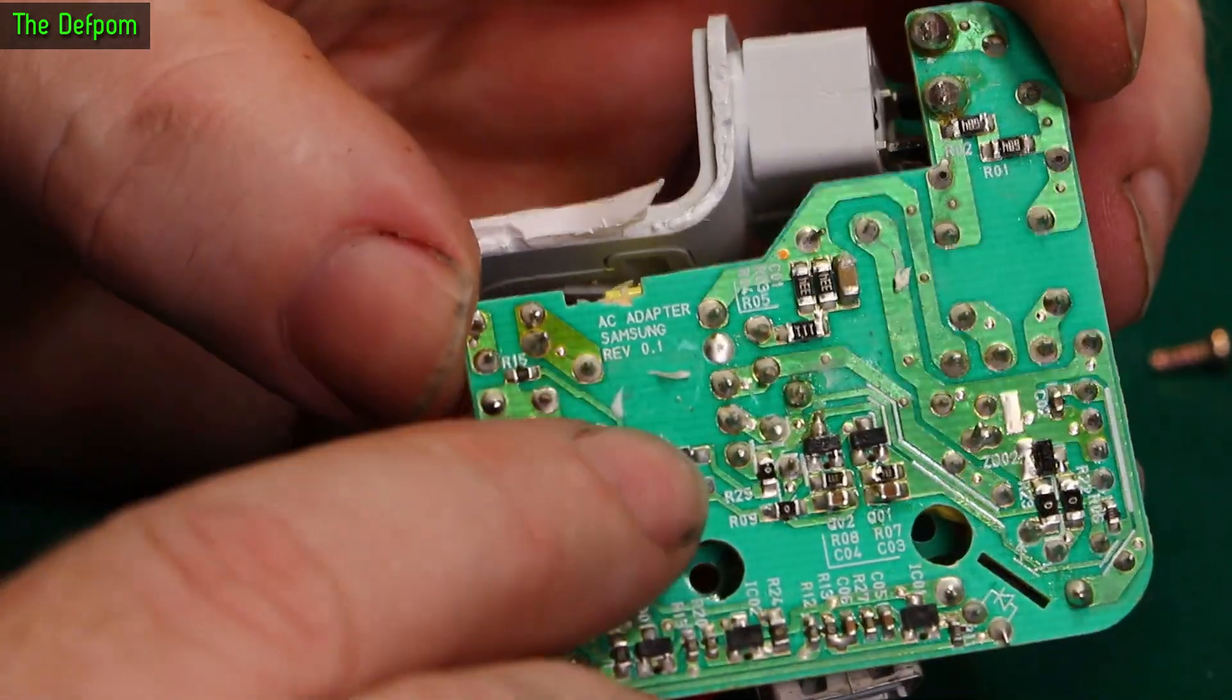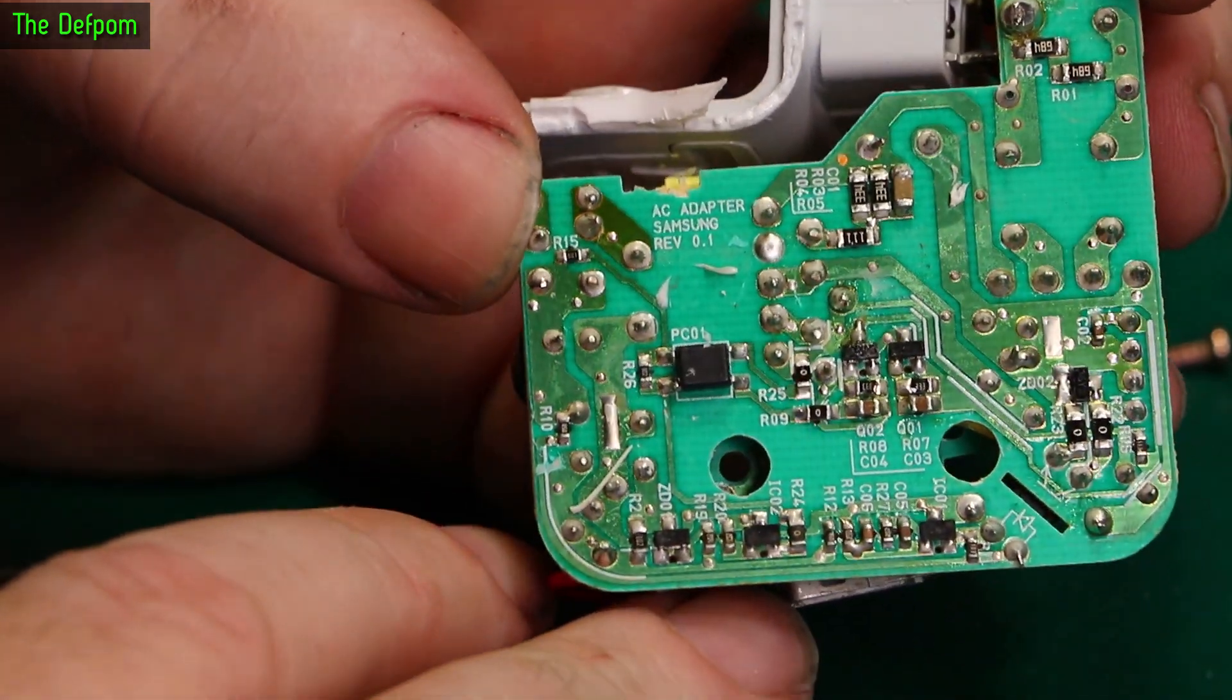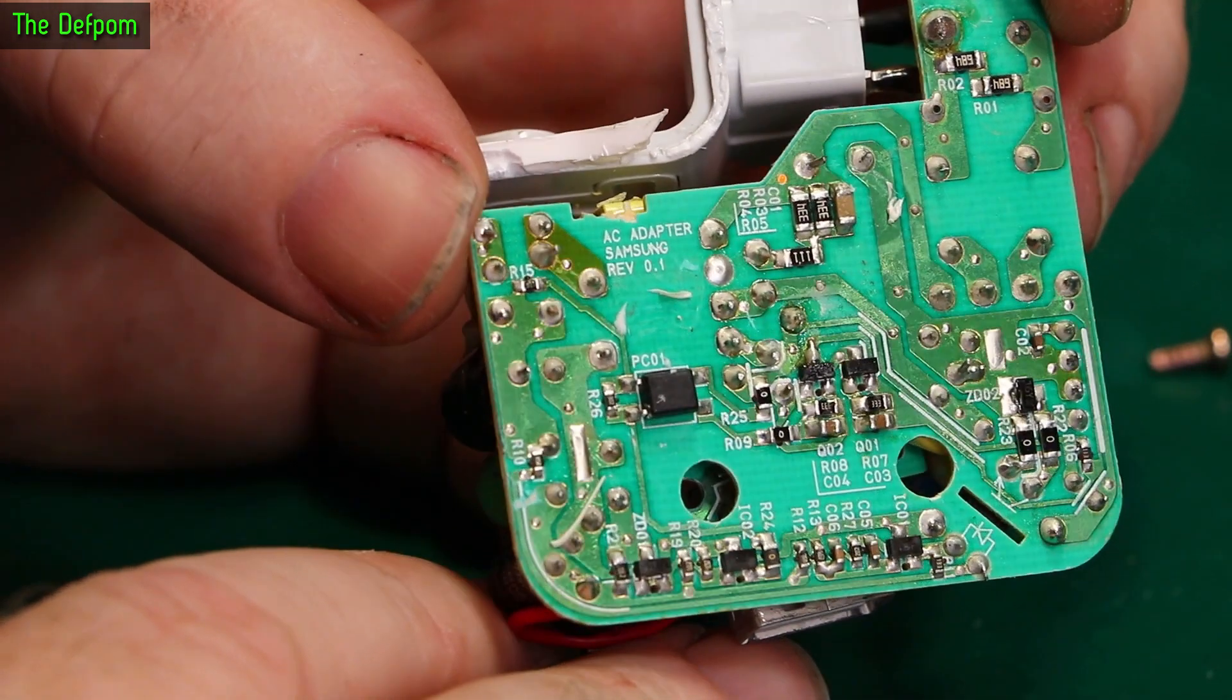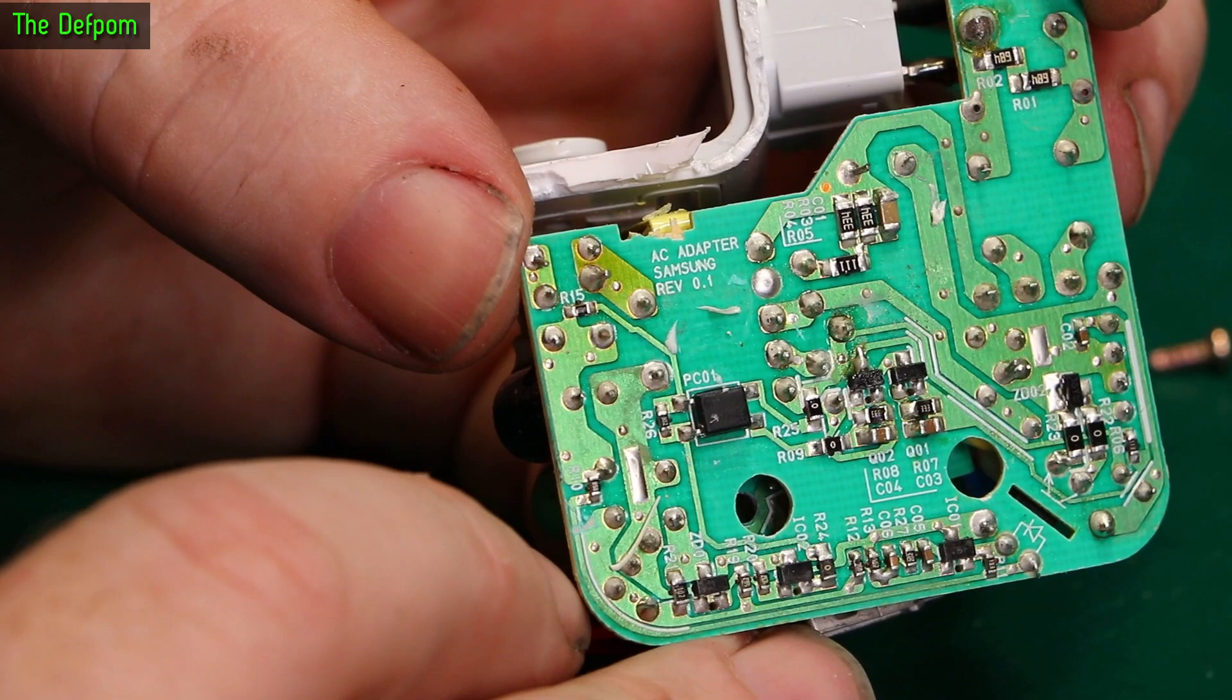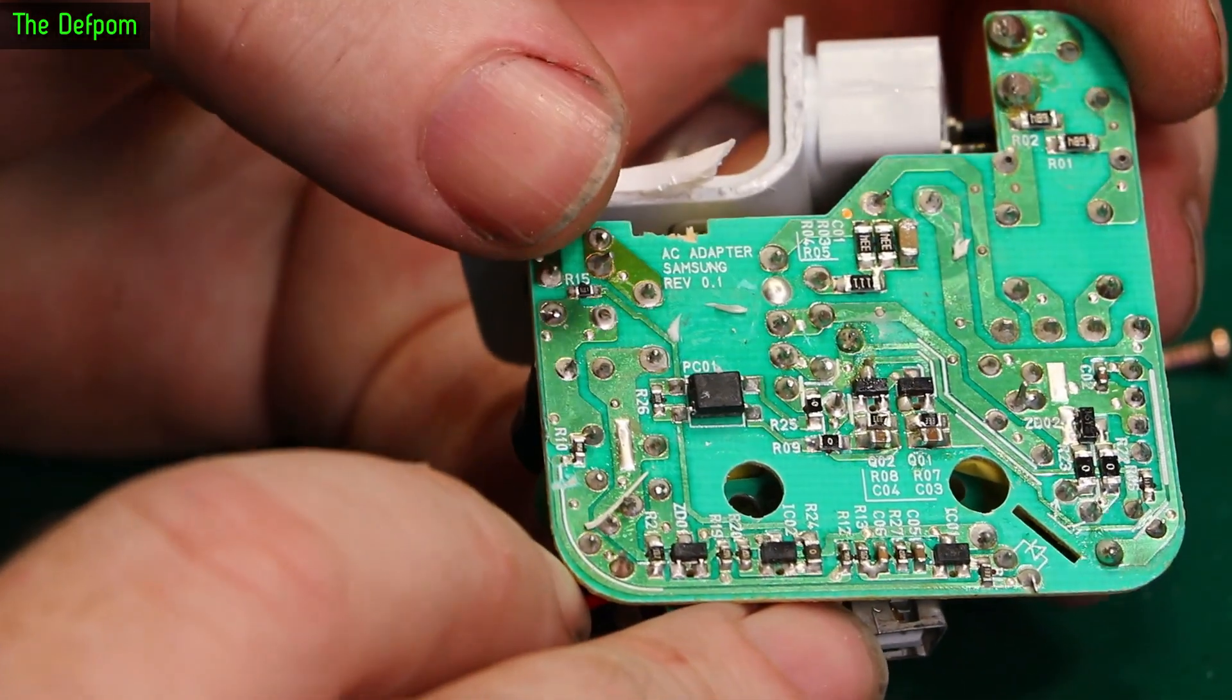Anyway, I don't expect there to be anything actually wrong with this side. Because it was basically working, what would happen is it just randomly shut off. It would be charging the phone for a while and then shut off and stop charging. And it could just be something as simple as a bad solder joint somewhere. It's entirely possible that solder joint has given up.